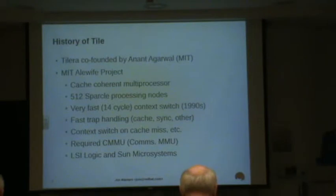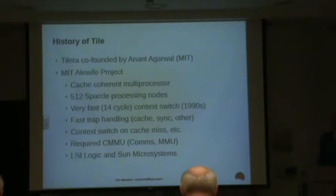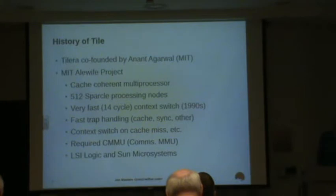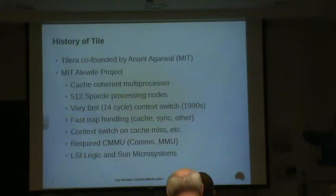They also sort of paved the way and trailblazed massively cache-coherent multiprocessing. They had 512 processing nodes, and each node had one of these chips in it in the early 90s. Pretty exciting stuff. The main thing is it's very trivial for this processor to very rapidly switch between tasks if the CPU is busy handling cache coherency issues between multiple processors in the background.